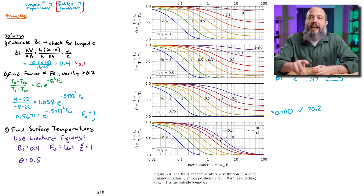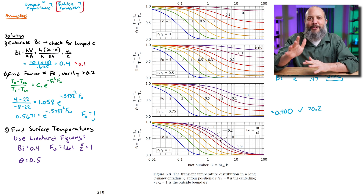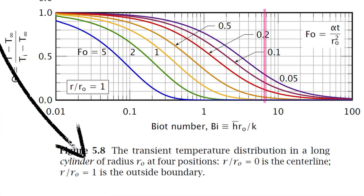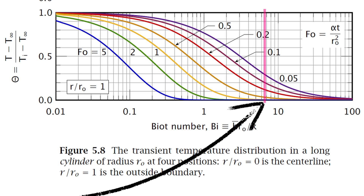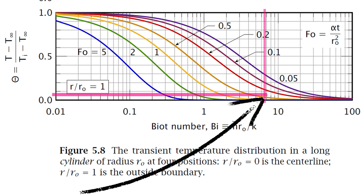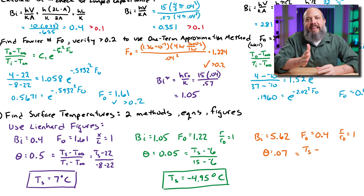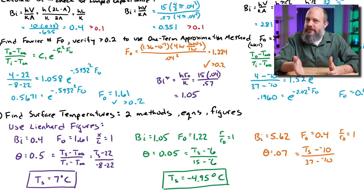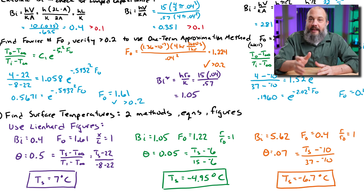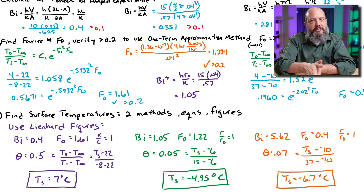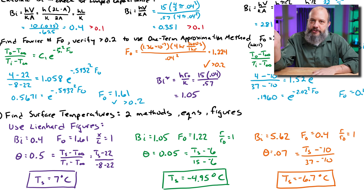For the cylinder, going to a Biot number of 5.6 on the horizontal axis and a Fourier number of 0.4 — which falls between the red and orange lines, a bit closer to the orange 0.5 line — zooming in I'll call theta ≈ 0.07. That leads to a surface temperature pretty close to the air temperature. A little calculator work gives −6.7°C, again close to the air temperature of −10°C. With a theta value near zero on these figures, you expect to be closer to your air temperature than your initial temperature.